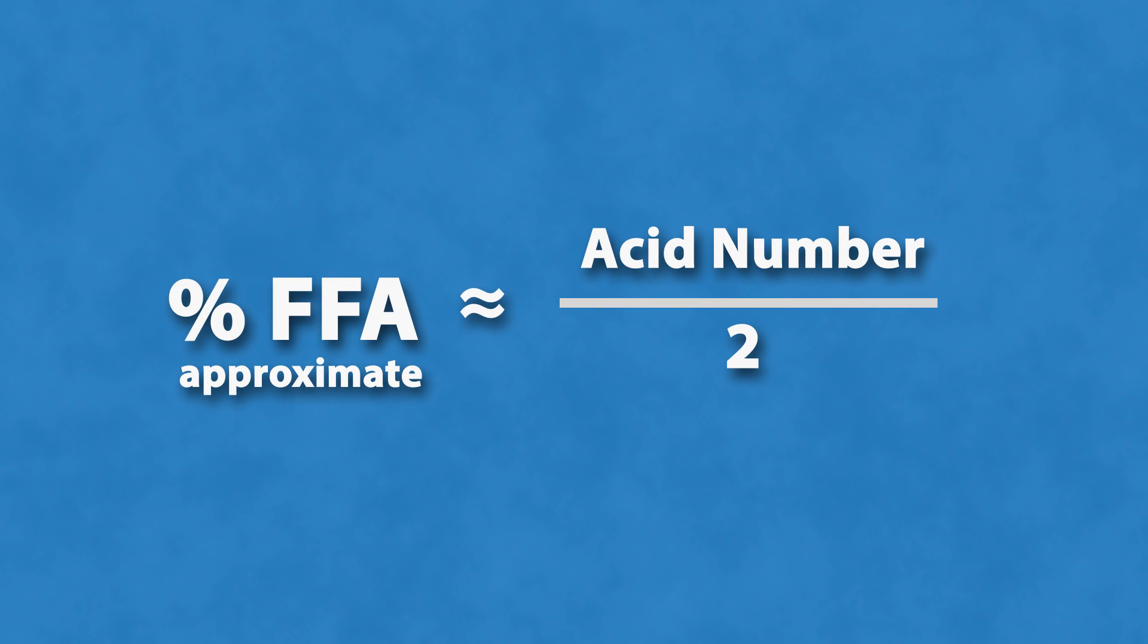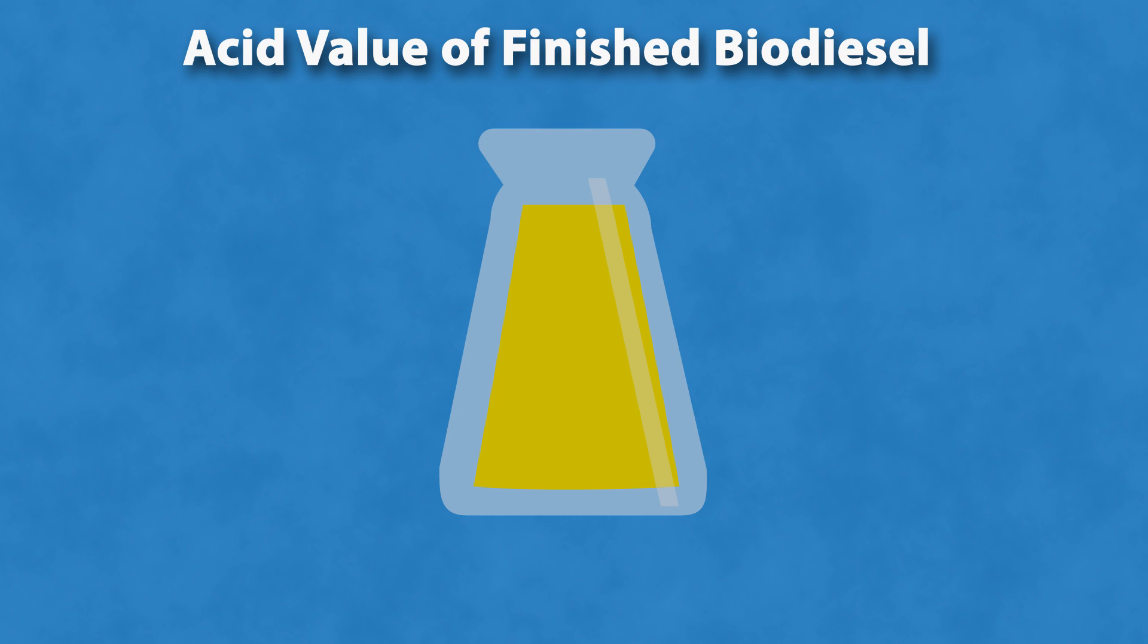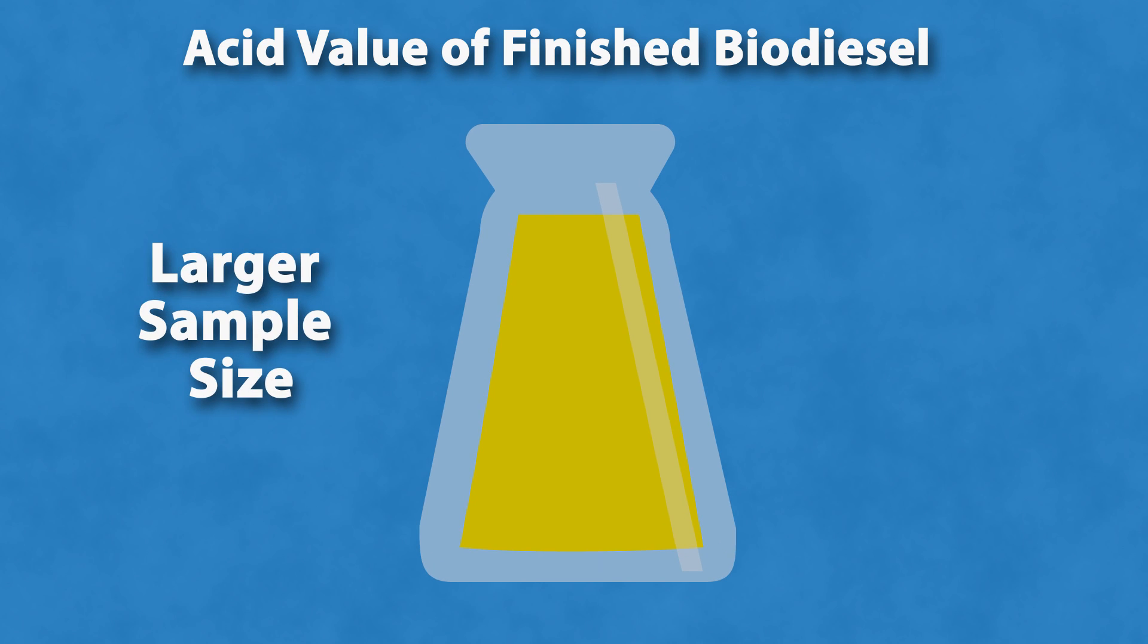To express this value as a percent of free fatty acids, divide the acid value by 2 if the fatty acid profile is mostly oleic, palmitic, or stearic acids. Oils with a high percentage of lauric acid such as coconut should be divided by 2.8. Note this method can also be used to measure the acid value of the finished biodiesel. Sample size will be larger and a weaker normality of potassium hydroxide should be used to achieve accurate results.